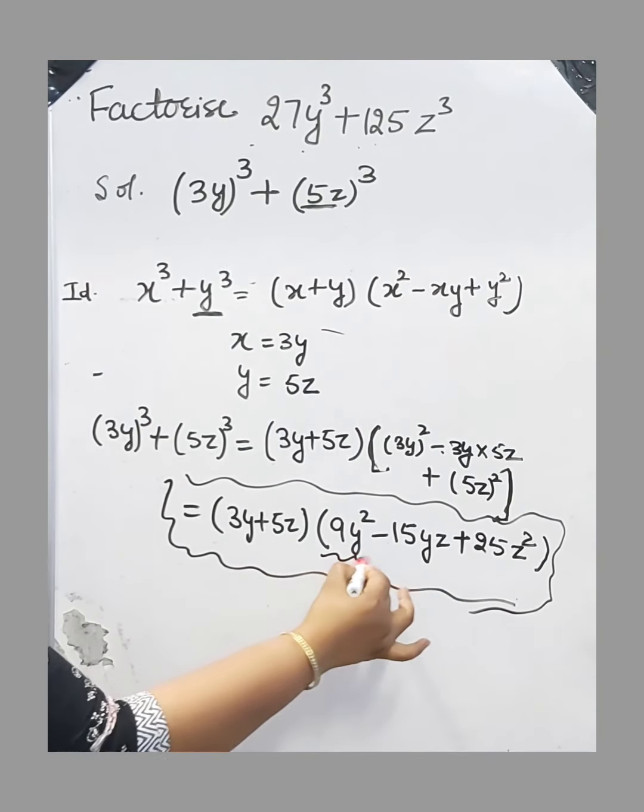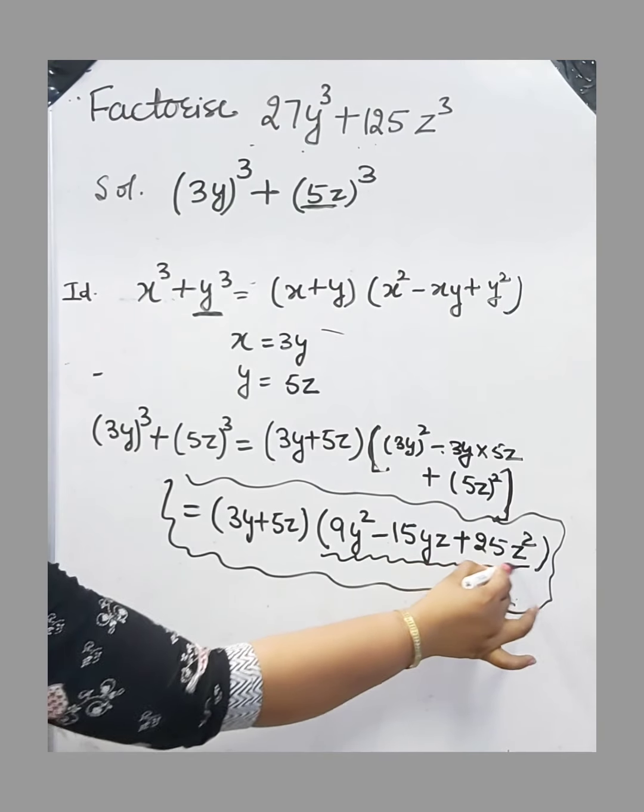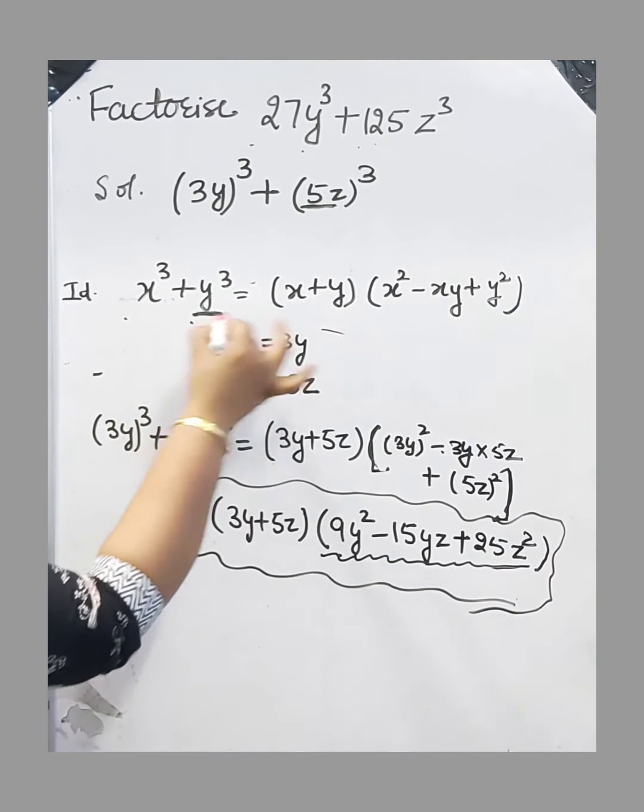This means we need not factorize this bracket if we are using this identity.